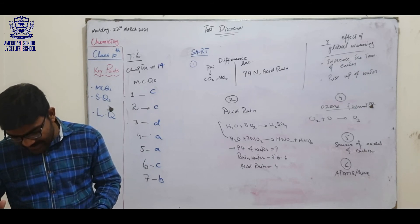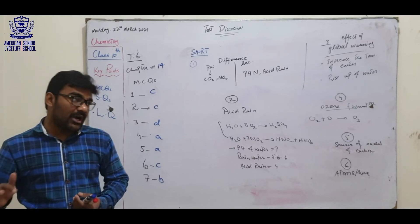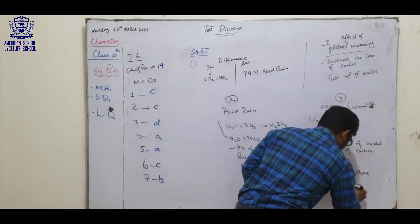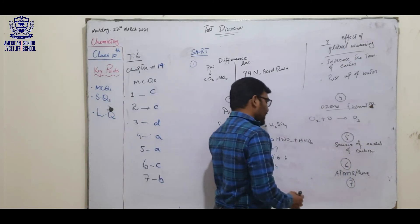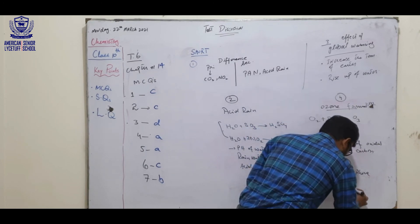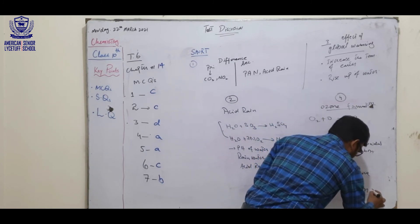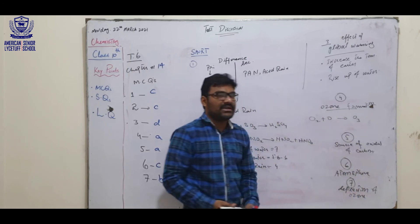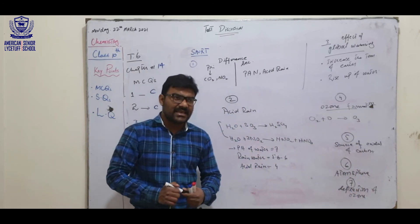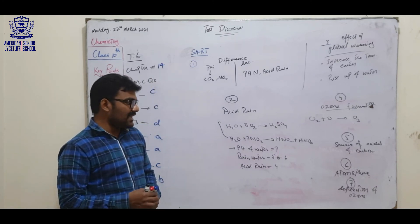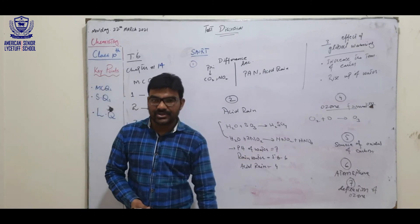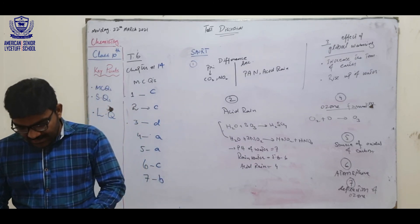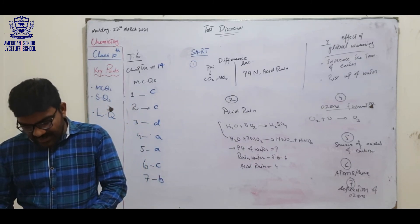How ozone layer is being depleted by fluorochlorocarbons? This is part of the depletion. Depletion of ozone, we have written about the fluorochlorocarbons. Depletion of ozone, we have discussed the reactions. CFCs reactions are written in textbook. Reactions are mentioned there today. Your answer is given. Next, you have long questions.